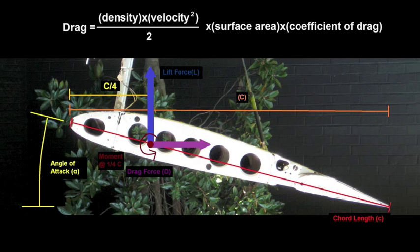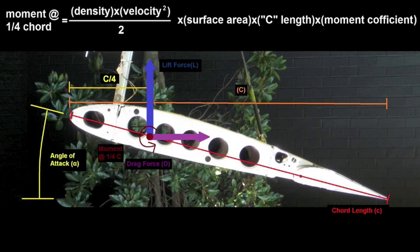There is a third component to the effects called a moment, acting on the wing. Essentially, as the flow travels around the airfoil at an angle — which is called the angle of attack — the moment causes the airfoil to minimize the angle. The value of this moment is similar to the previous two equations, but also takes into account the chord length and the moment coefficient.